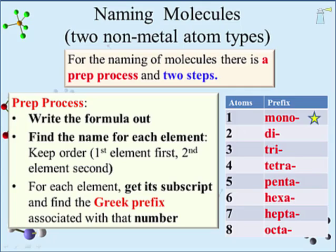For instance, a subscript of 1 will be converted into the term 'mono.' A 3 will be converted into 'tri' — familiar from the three-wheeled bike called the tricycle. Other familiar Greek prefixes include 'penta,' as in the five-sided pentagon, and 'hexa' and 'octa' for six- and eight-sided shapes, hexagon and octagon respectively.